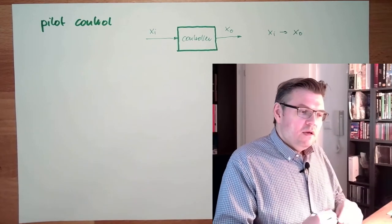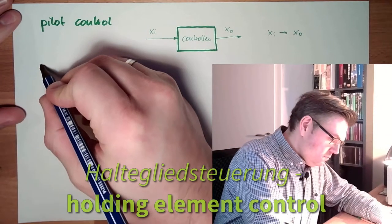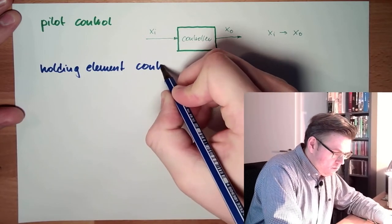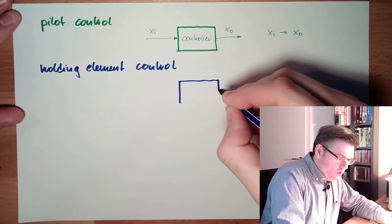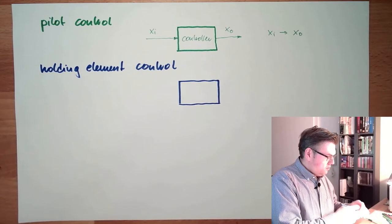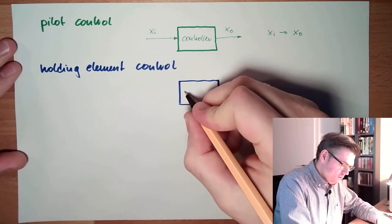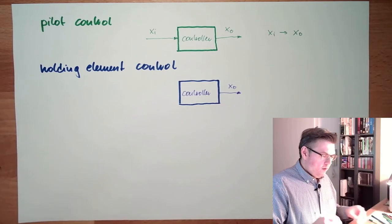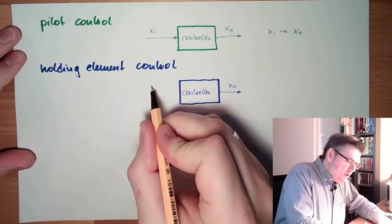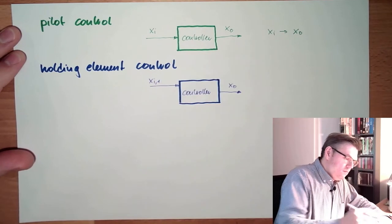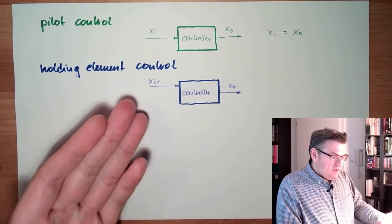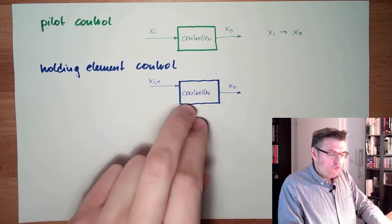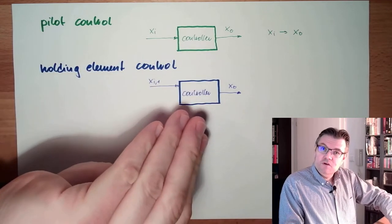Other type of control is holding element control. Here, the controller of course also has some output. There is also some input. However, the input is just doing something inside the controller. The controller knows the input was already there. So the input might get the controller in a different state, and the output is reacting on the internal state of the controller.